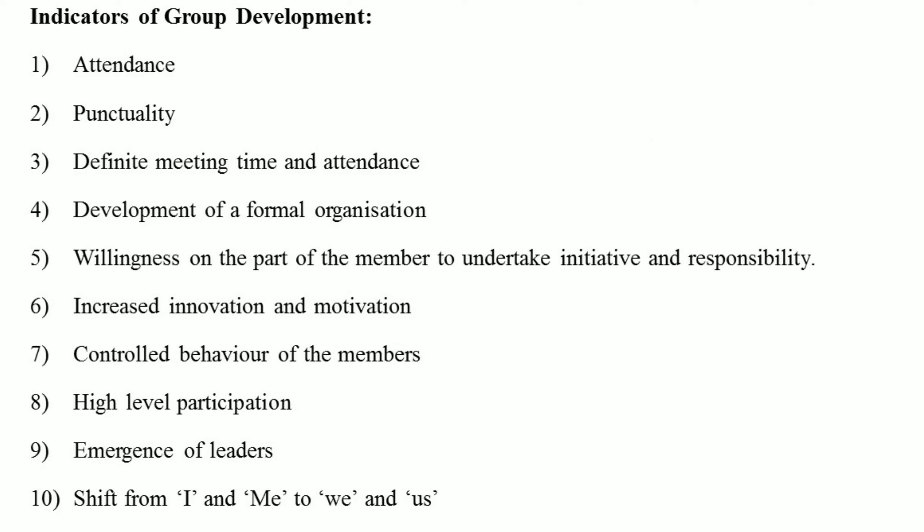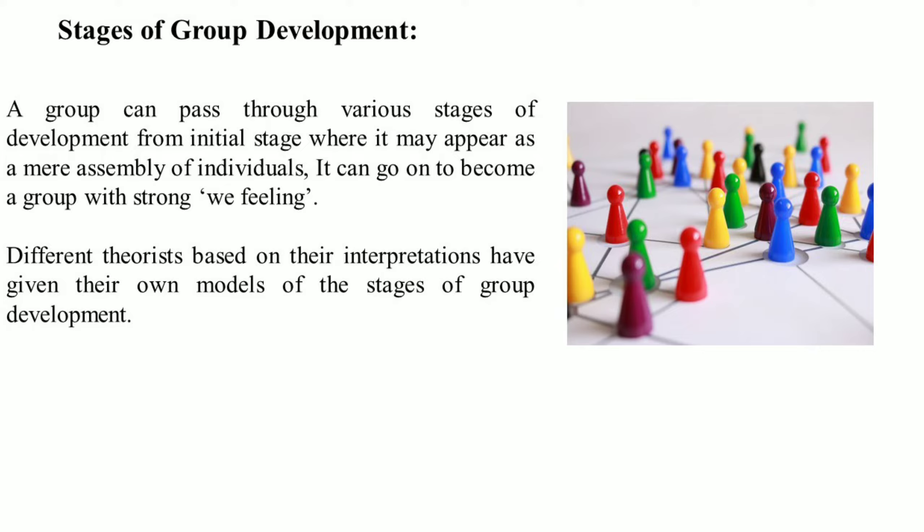There are certain indicators of group development: first, attendance and punctuality with a definite meeting time; development of a formal organization; willingness on the part of members to undertake initiative and responsibility; increased innovation and motivation; controlled behavior of members; high level of participation; emergence of leaders; and lastly, a shift from 'I' and 'me' to 'we' and 'us'.